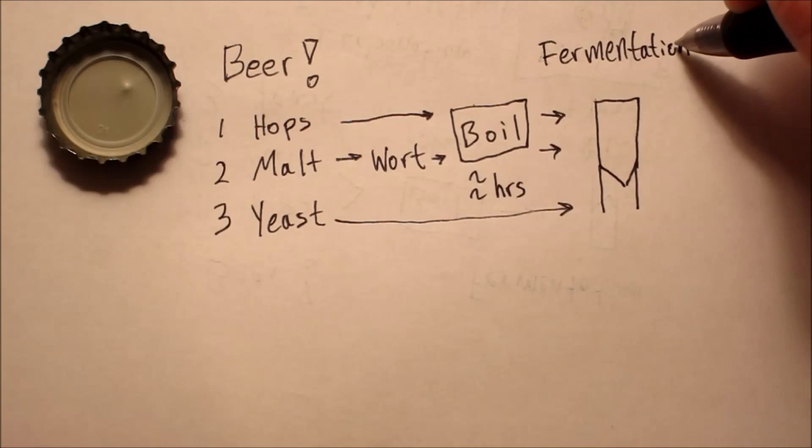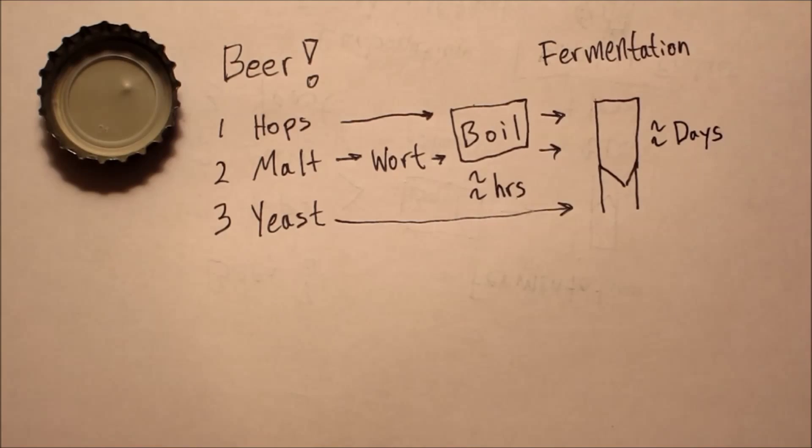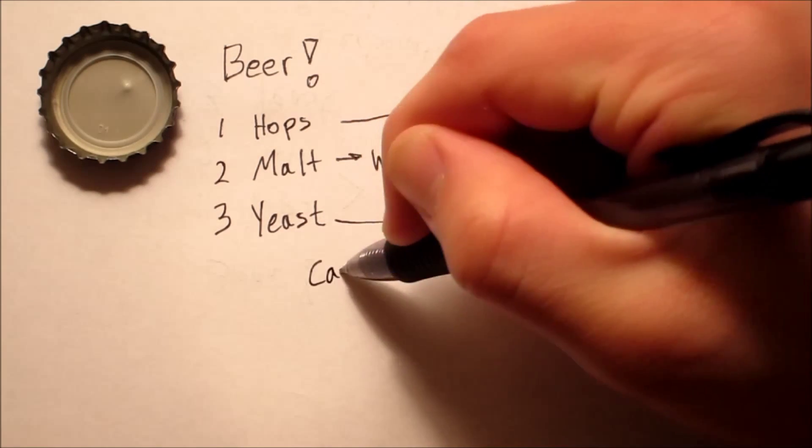Fermentation is the process where the yeast eat the sugar in the wort and create alcohol and carbon dioxide.